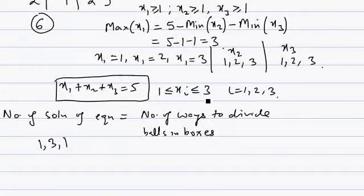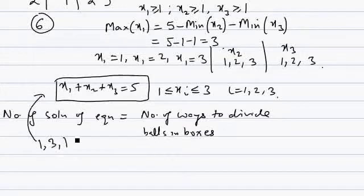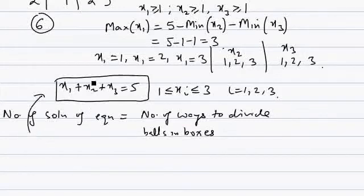For example, a solution like (1, 3, 1) means three variables sum to 5, none less than 1 or greater than 3. The solution (1, 3, 1) is one integral solution, and it also represents a way to place balls in boxes: 1 in box one, 3 in box two, and 1 in box three. So the number of solutions represents the number of ways to place balls in boxes.